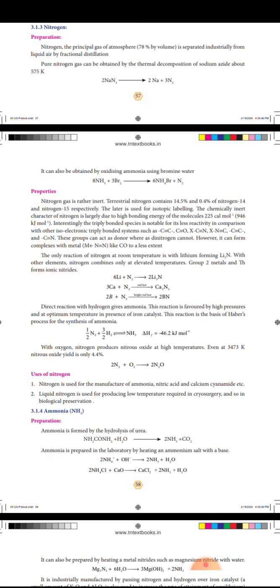1/2 N2 plus 3/2 H2 equilibrium gives NH3. Delta H is equal to minus 46.2 kJ per mole, so it is exothermic.